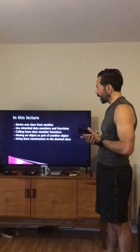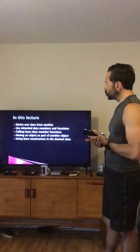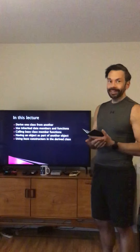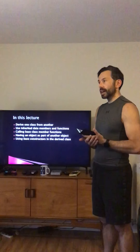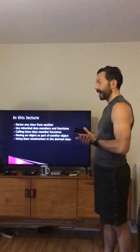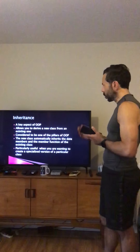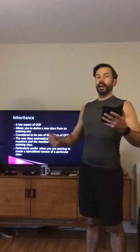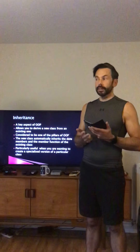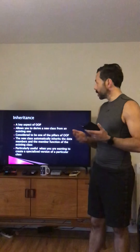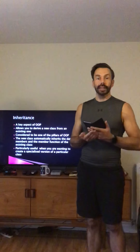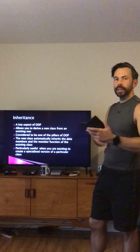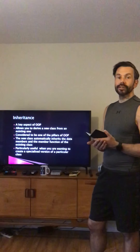In this lecture we're going to learn how to derive one class from another, use inherited data members and functions, call base class member functions, have an object as part of another object, and use base constructors in the derived class. Inheritance is a key aspect of object-oriented programming. The four pillars of OOP are encapsulation, inheritance, polymorphism, and abstraction — and you'll be questioned on that in your class test. One of the key aspects allows you to derive a new class from an existing one to extend functionality, and it's the core of reusability.